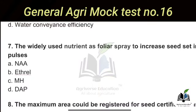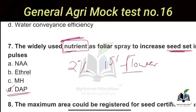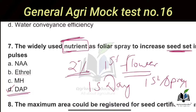The seventh question: Which nutrient is widely used as foliar spray to increase seed set in pulses? Here the answer is not a hormone but a nutrient used as a foliar spray particularly for pulses. The right answer is Option D — DAP, that is Di-ammonium Phosphate. This spray is applied at 2% concentration at the time of first appearance of flower, and the second spray is 15 days after the first spray.